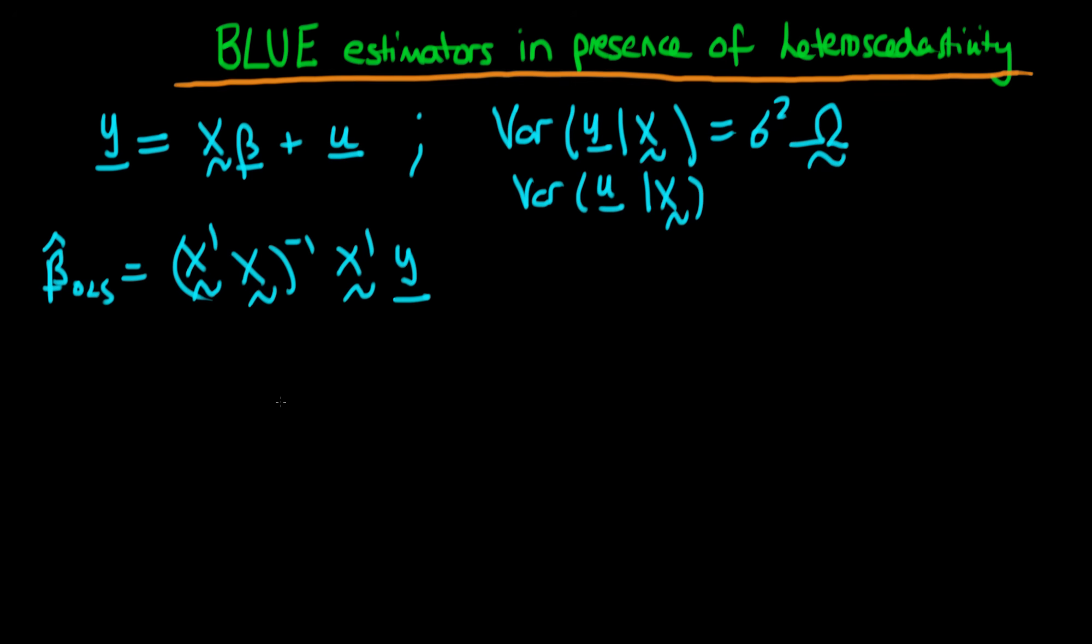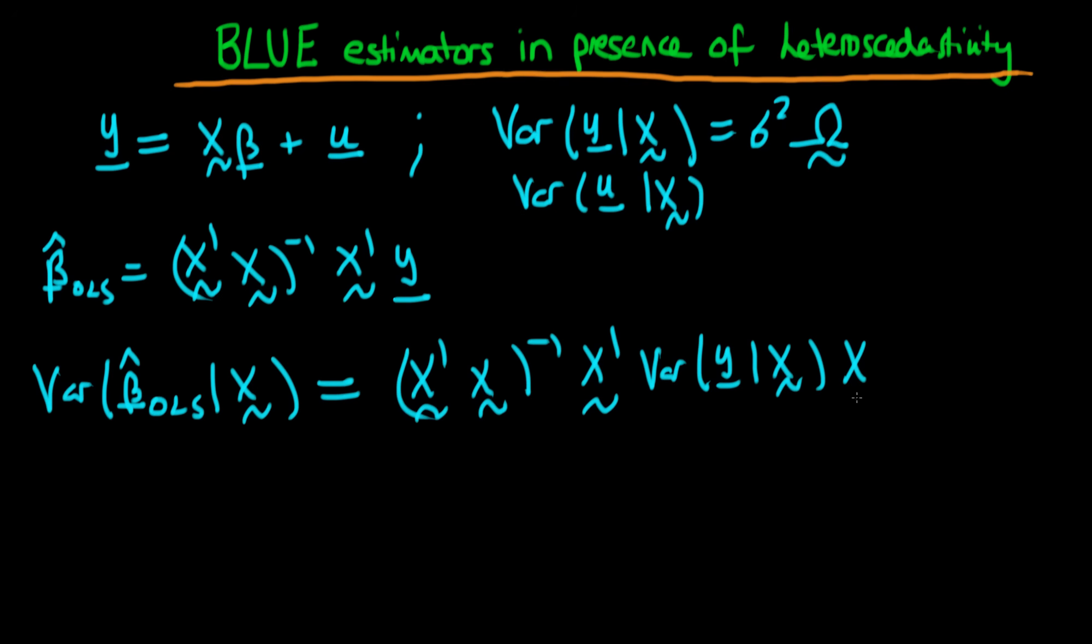And furthermore, we can actually come up with an expression for the variance of beta hat OLS. So the variance of our OLS estimator beta hat OLS given X is just equal to X prime X to the power minus 1 times X prime times the variance of y given X times X times X prime X to the power minus 1.